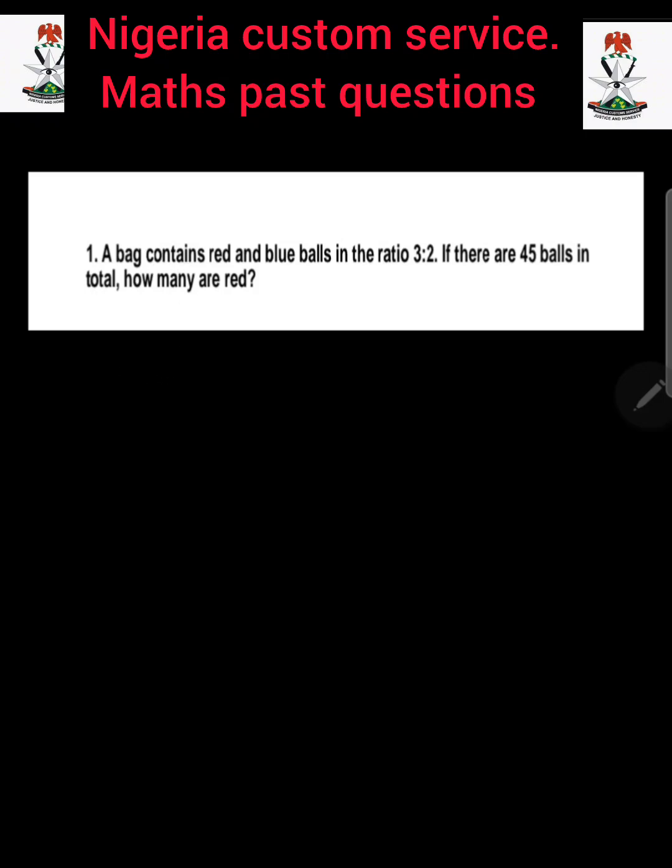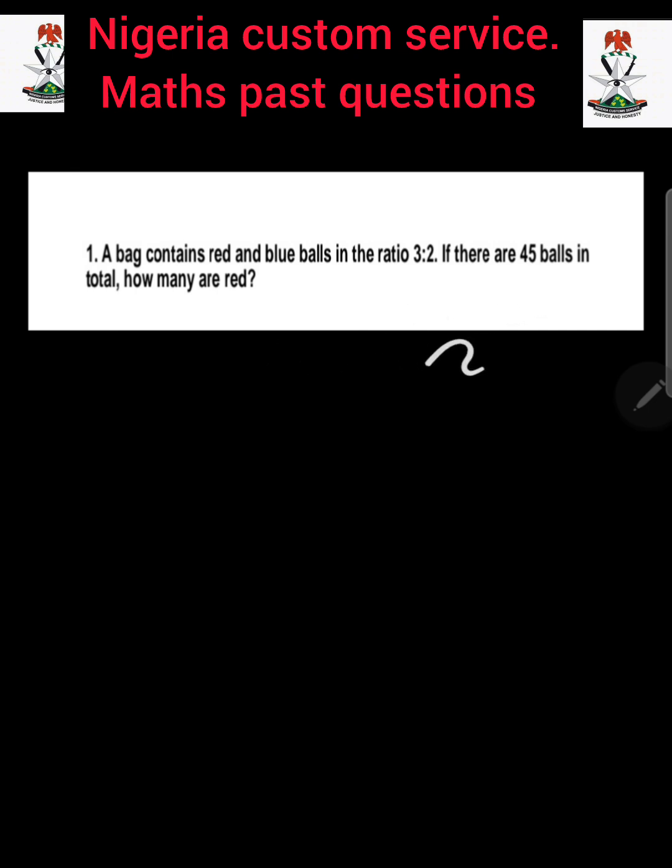Question number 1: A bar contains red and blue balls in the ratio of 3:2. If there are 45 balls in total, how many are red?